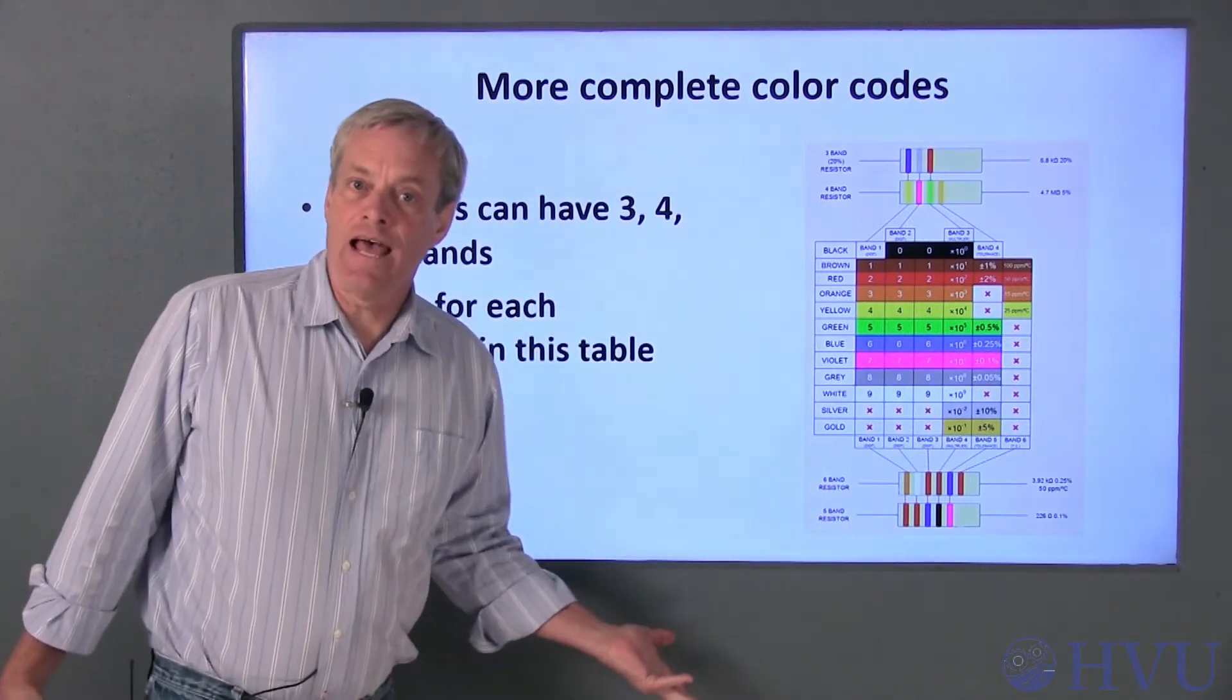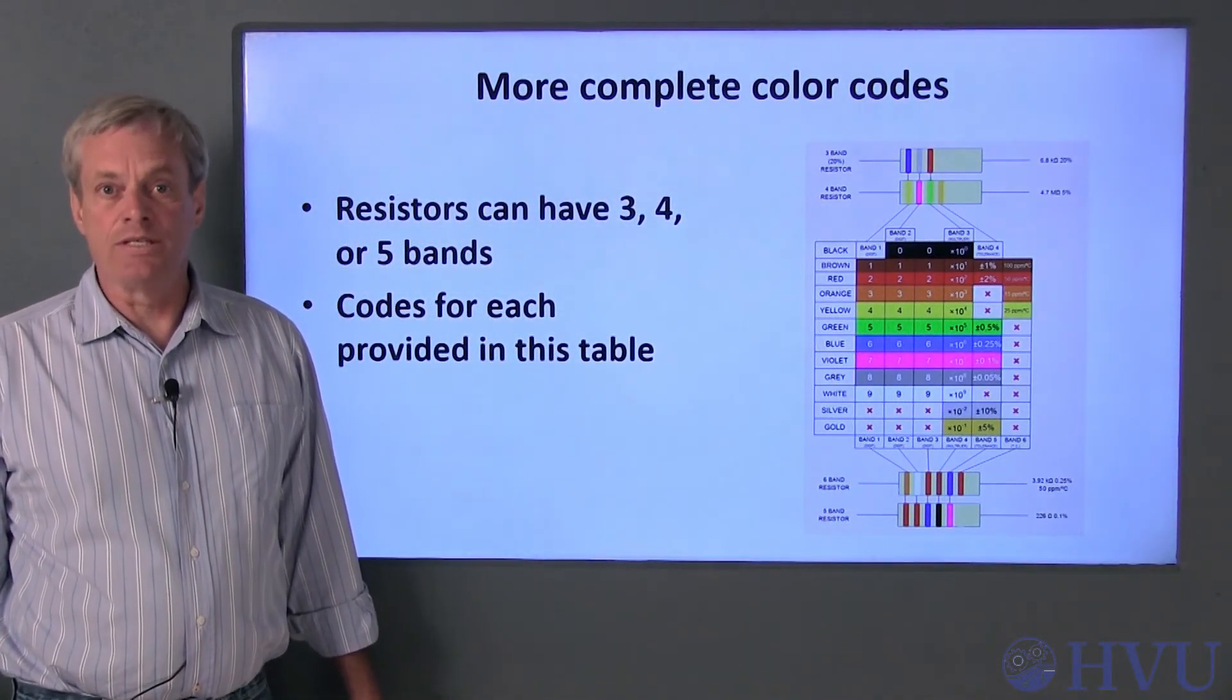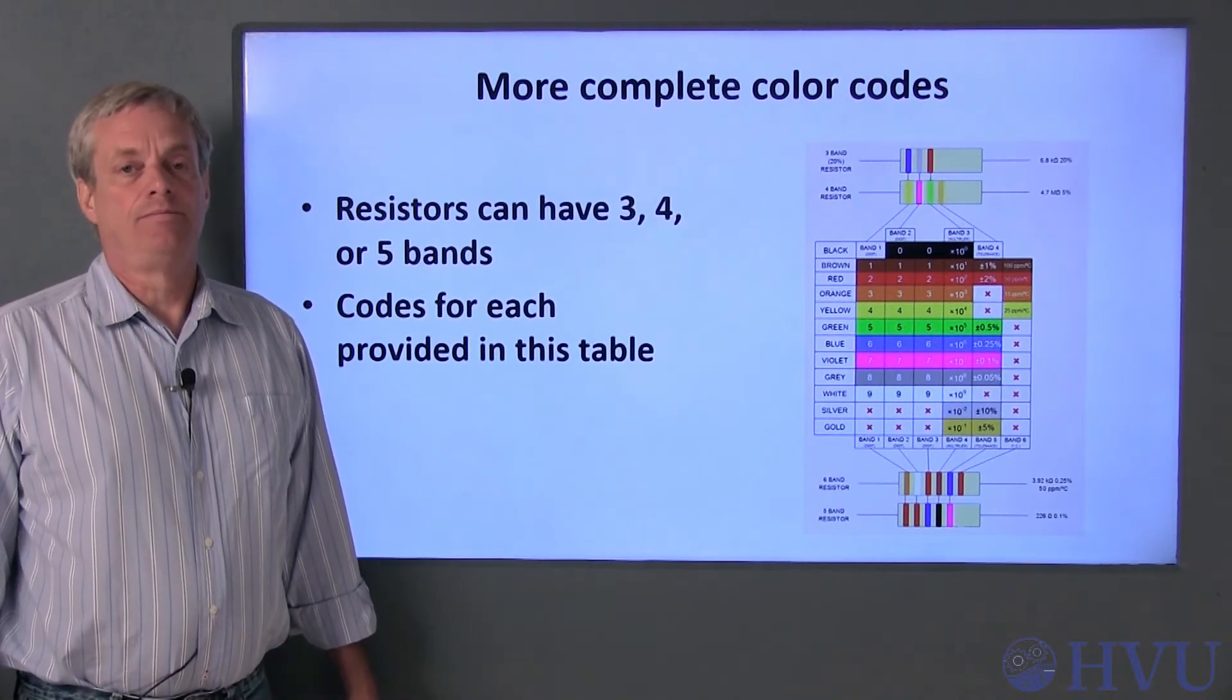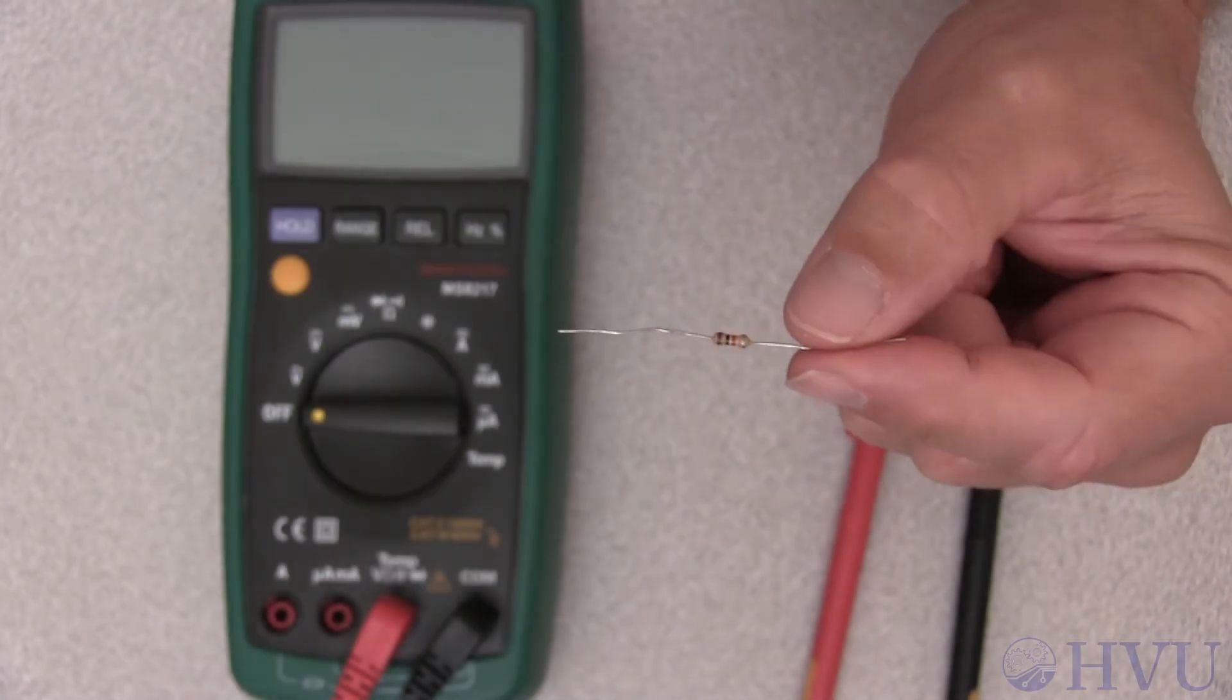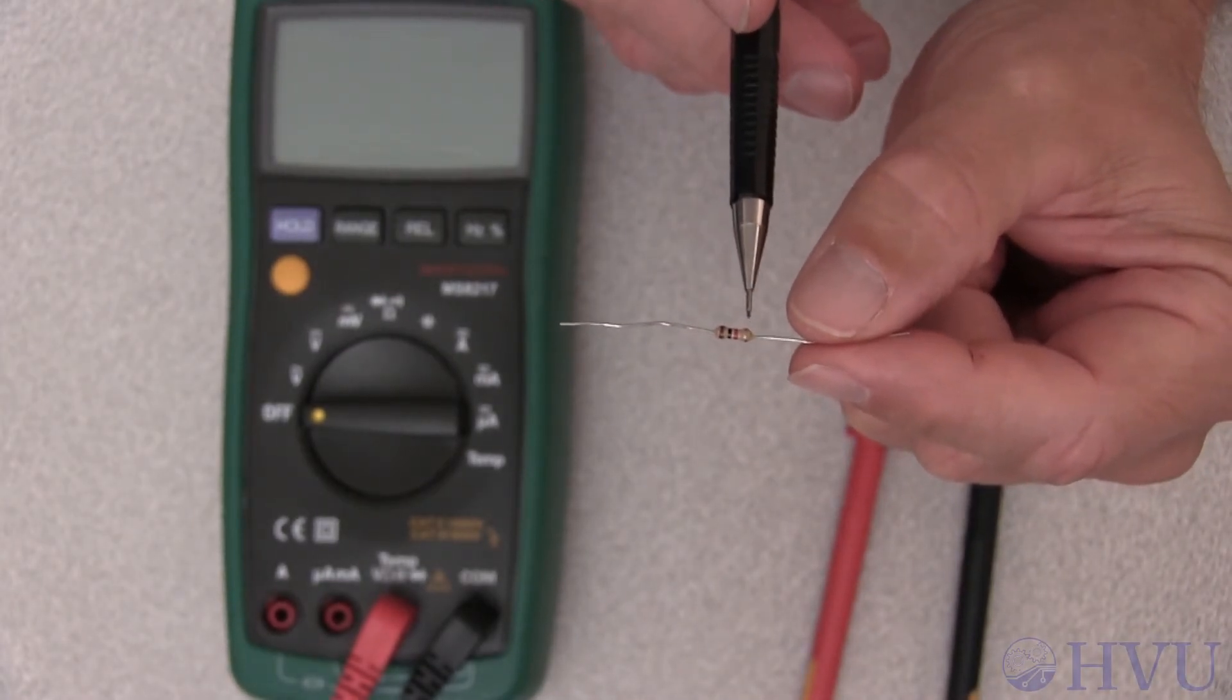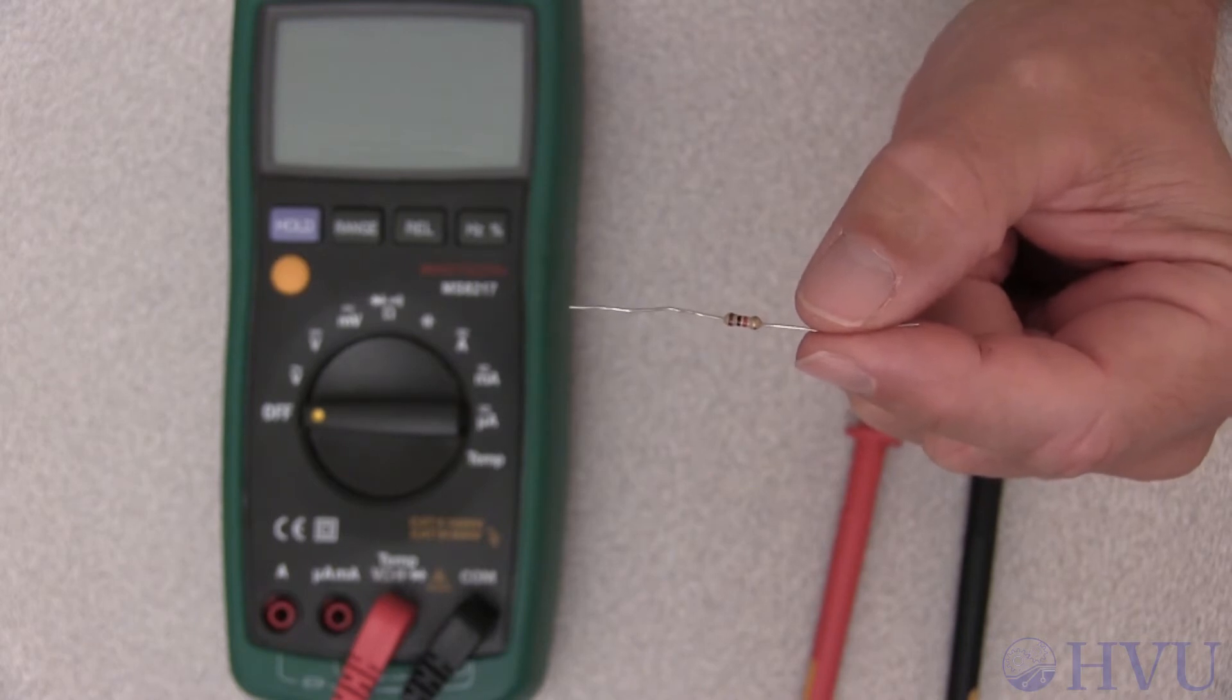Now let's take a look at an example of using the color codes to determine a resistor's nominal resistance, and then using a digital multimeter to measure the resistance. This resistor's color codes are brown, black, red, and gold. Brown is 1, and black is 0, so that's 10. Red is 2, so that becomes 10 times 10 squared, which is 1000 ohms, or 1 kiloohm.